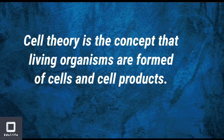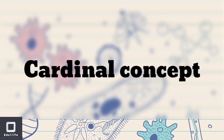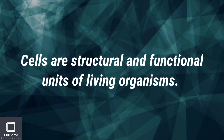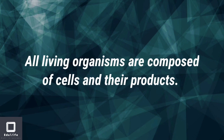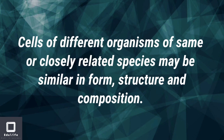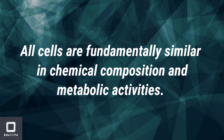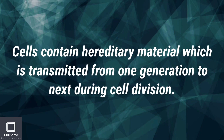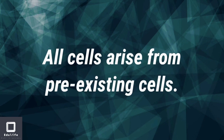Cell-related species may be similar in form, structure and composition. All cells are fundamentally similar in chemical composition and metabolic activities. Cell contains hereditary material which is transmitted from one generation to the next during cell division. All cells arise from pre-existing cells.